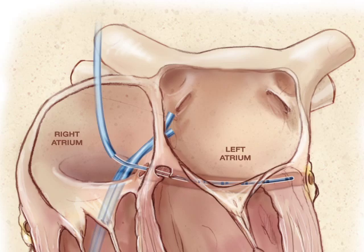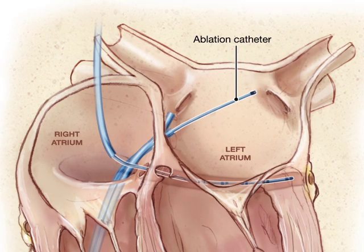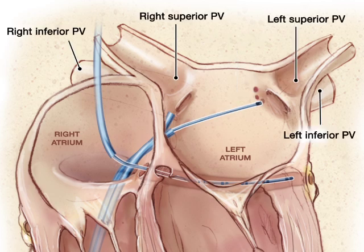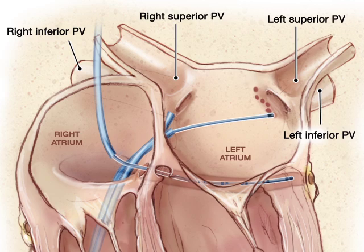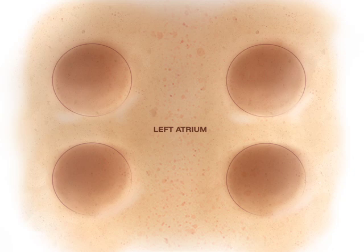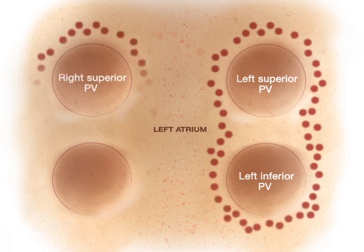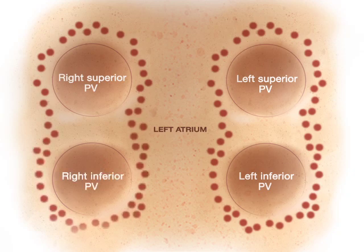Now navigating inside the three-dimensional reconstruction with occasional reference to fluoroscopic images, the operator performs a series of point ablation lesions in circles outside the pulmonary veins. This is primarily done using anatomical references, although the electrogram from the ablation catheter itself is monitored. Typically, a large ablation ring is first made around both the left superior and left inferior pulmonary veins, followed by another large ring around the right superior and right inferior pulmonary veins.